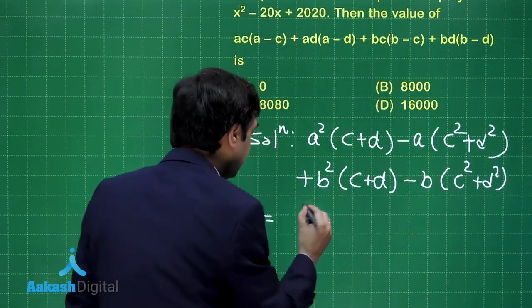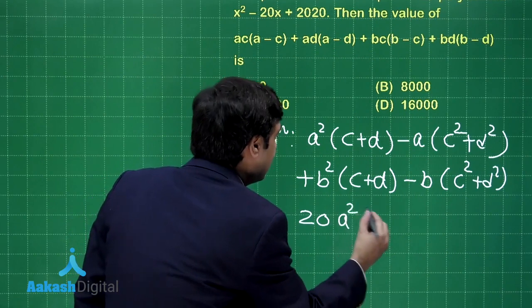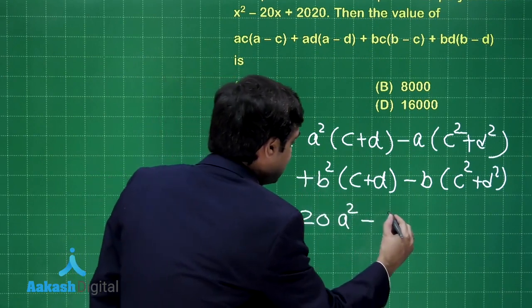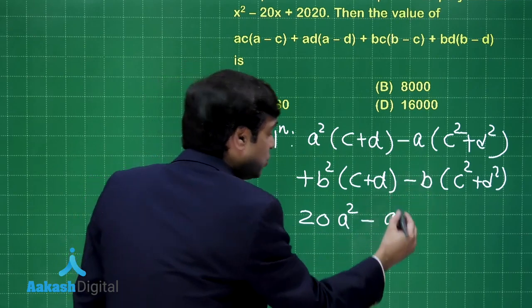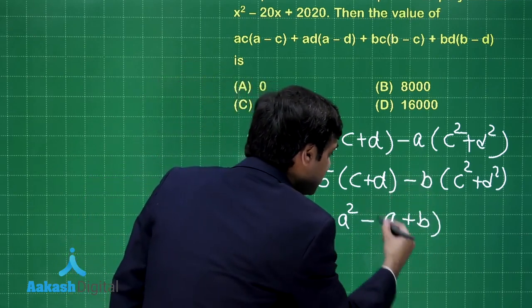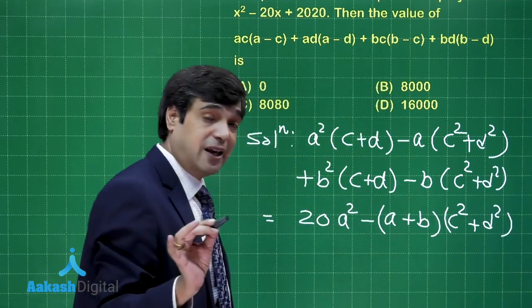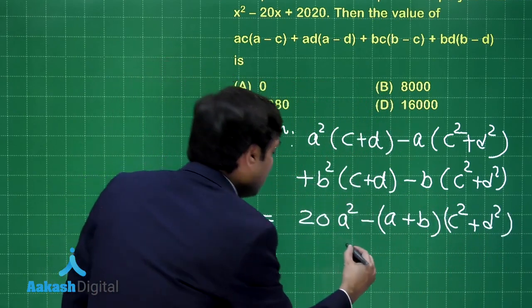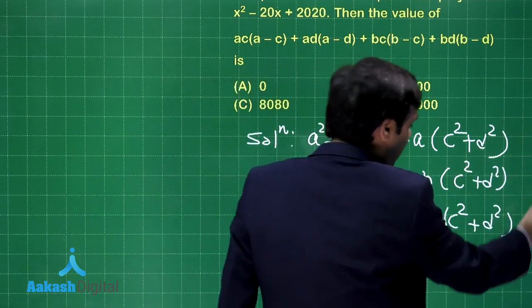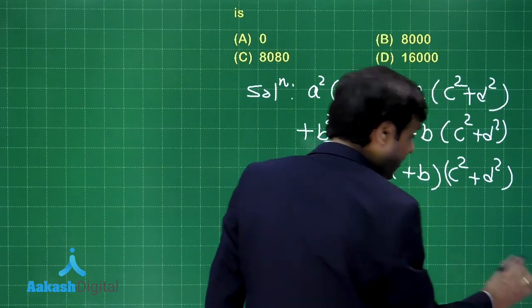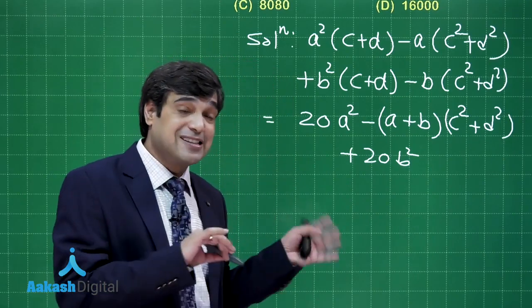So let's write down 20a² minus, and we can take a and b together — so (a + b) times (c² + d²). This is clear. What we are left with is that term plus 20b². Now rearranging, we can see that a² + b² can be written using the sum and product of a and b.